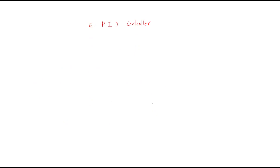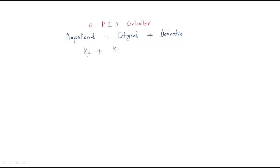Next we will move on to the PID controller. PID means: P is proportional, I is integral, and D is derivative controller. By combining proportional, integral, and derivative, we get the PID controller. The proportional term is KP, the integral term is KI/S, and the derivative term is S·KD.